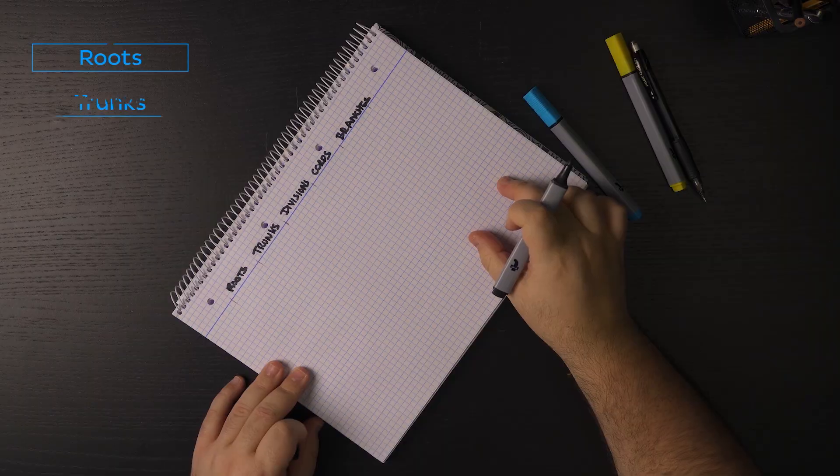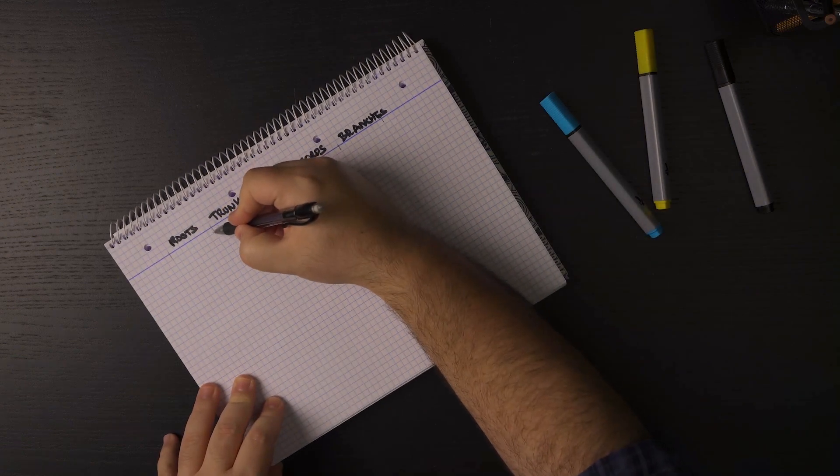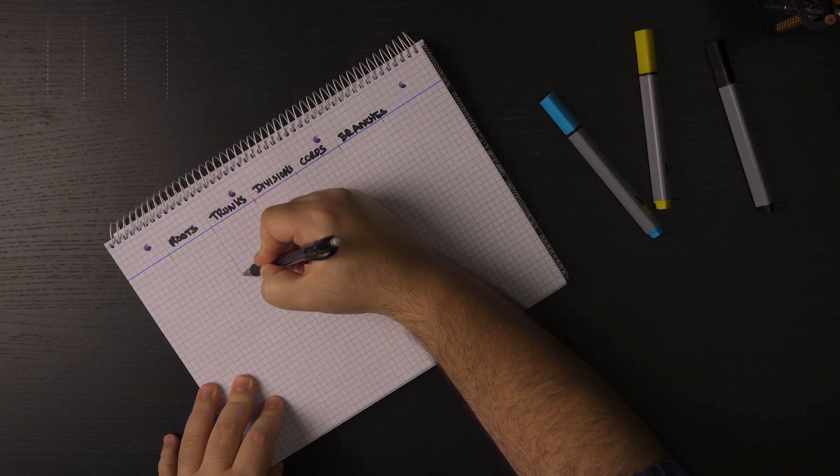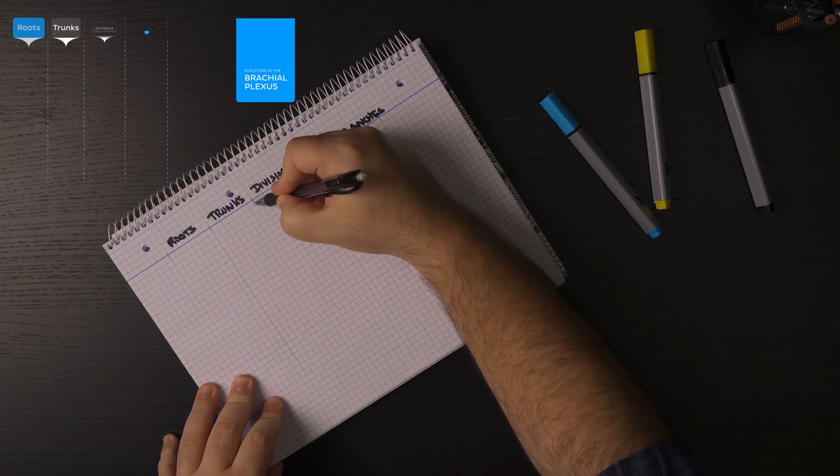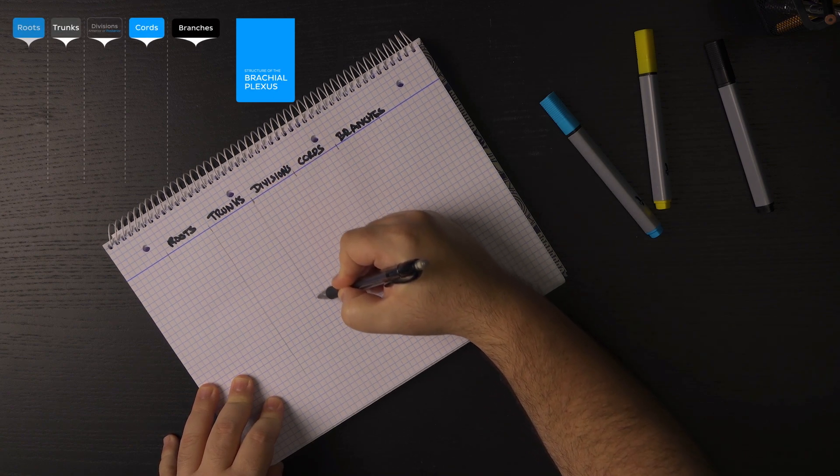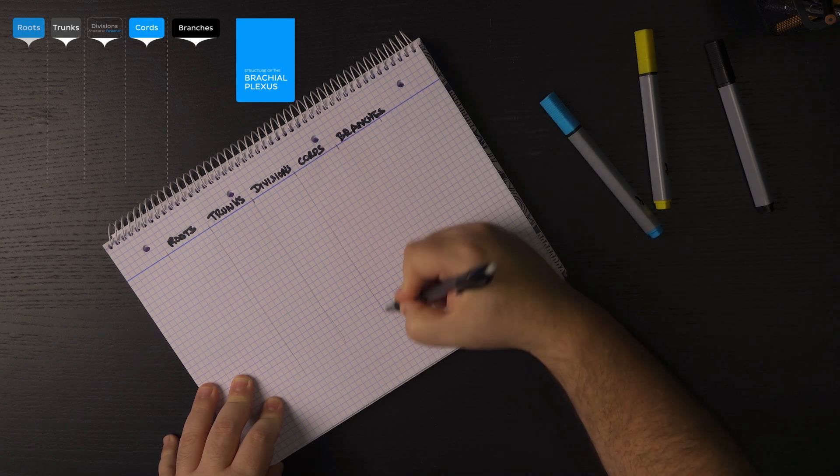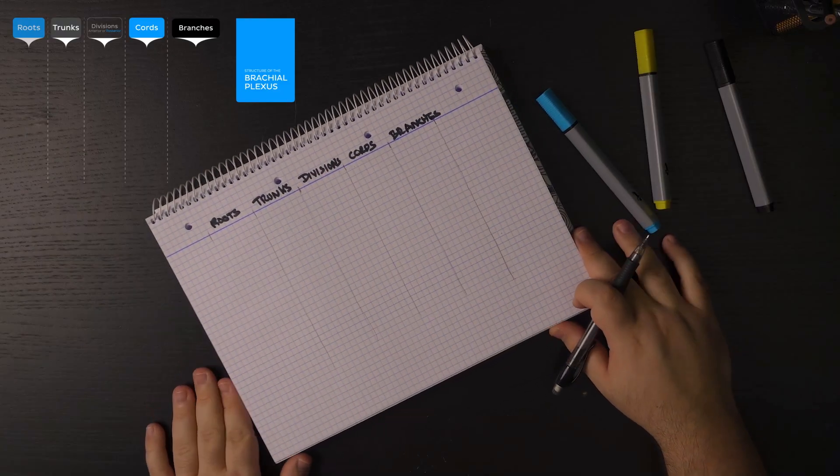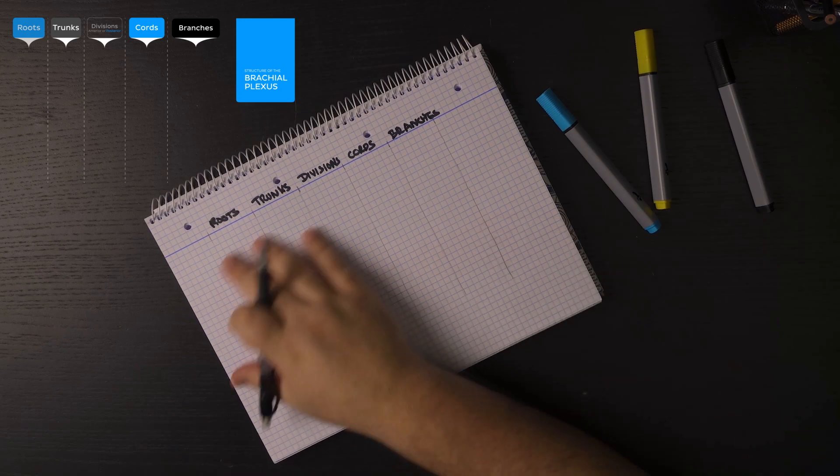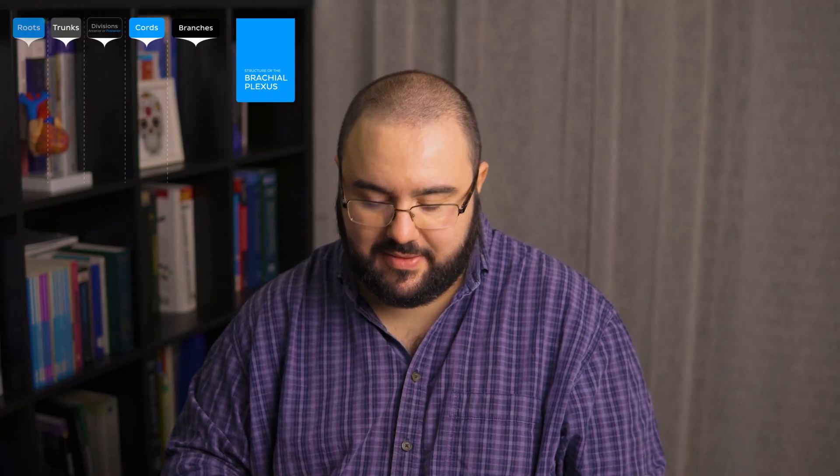And keep in mind that here I'm just going to be covering the main branches of the brachial plexus. This is definitely very helpful. Here are the lines. I think it's important to just quickly outline what's going to happen. This is helpful to just have a light outline of where you want things to go. All right. Now that you have these outlines, we should be more or less ready to start drawing our brachial plexus.